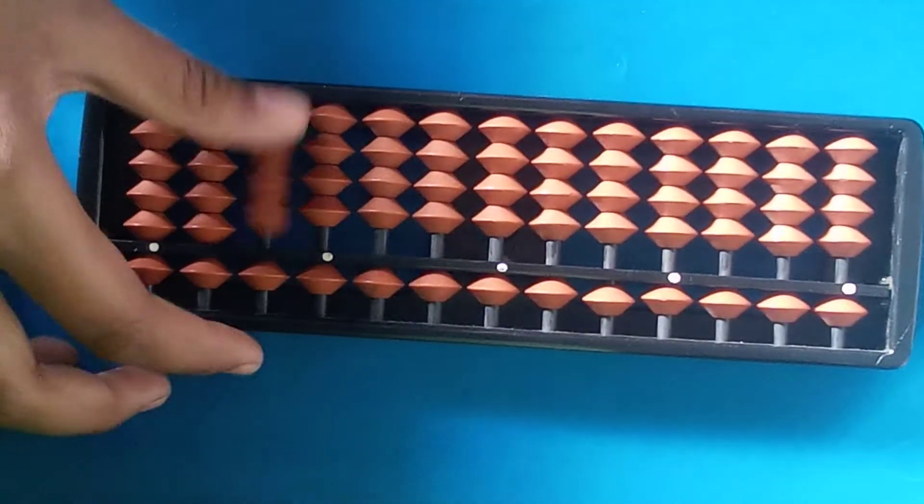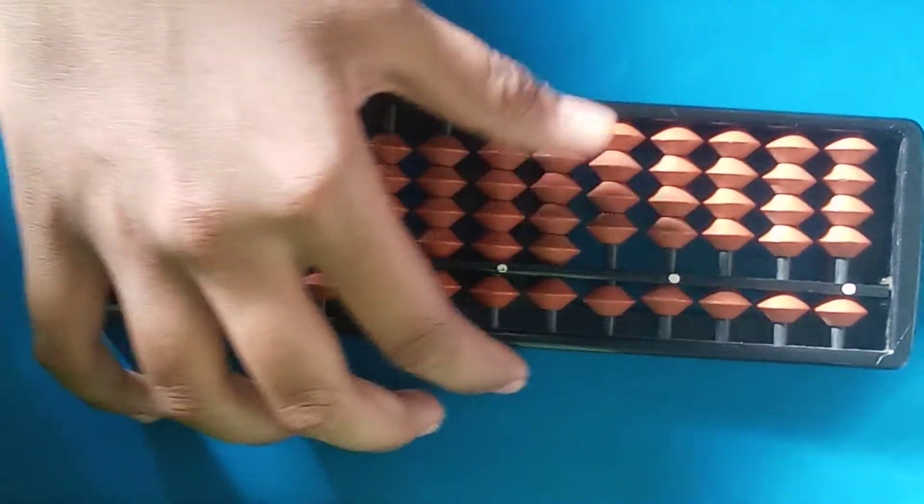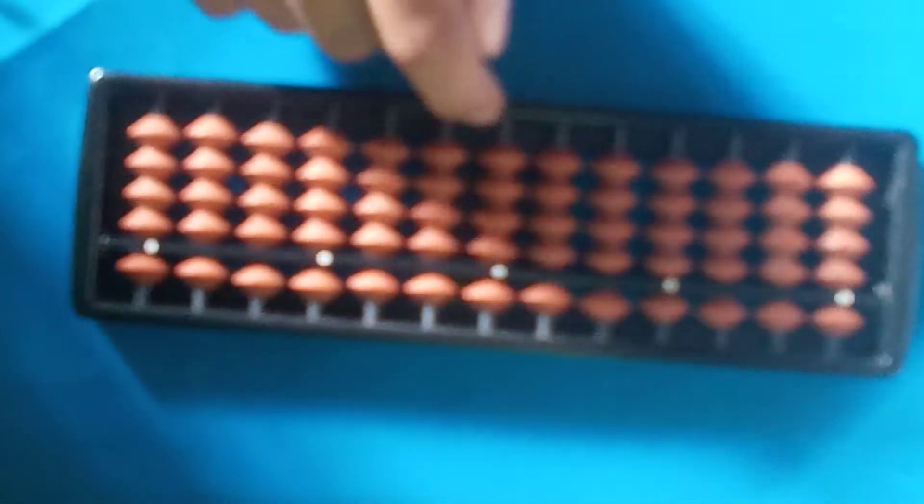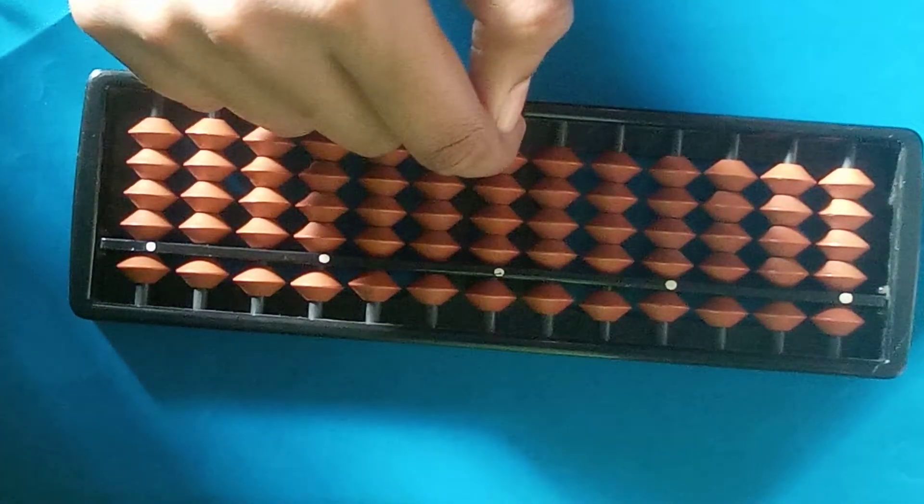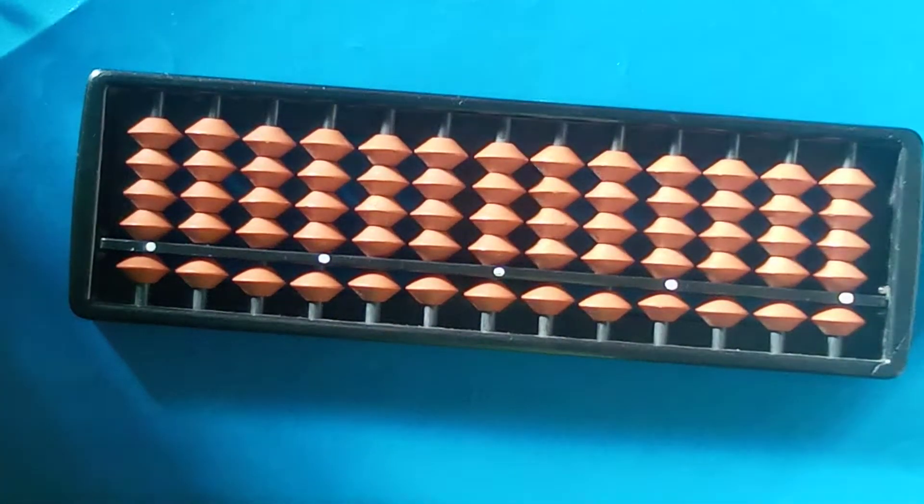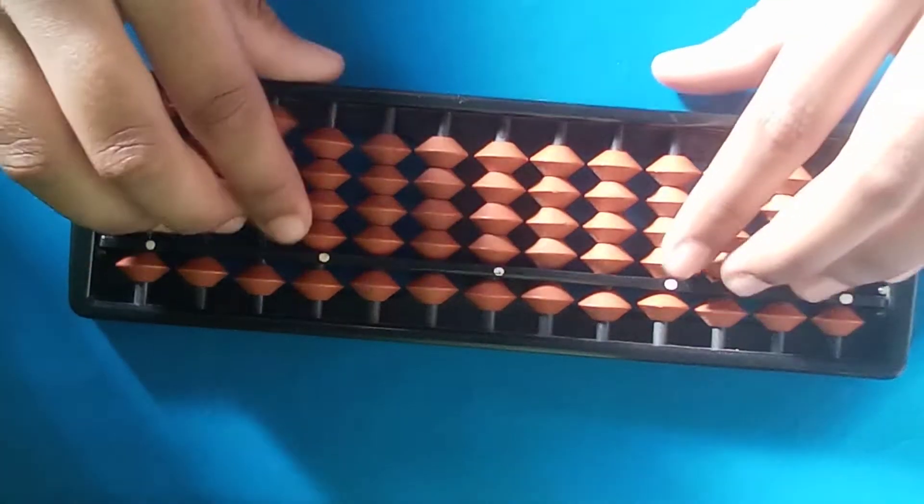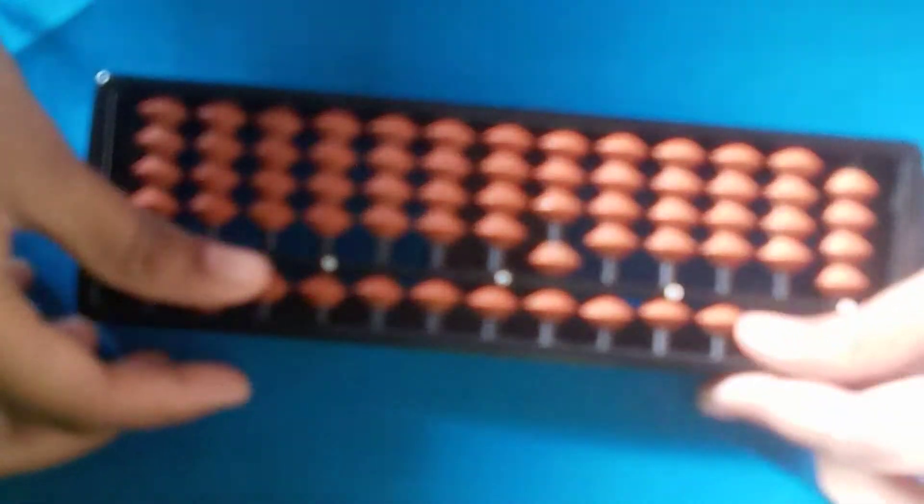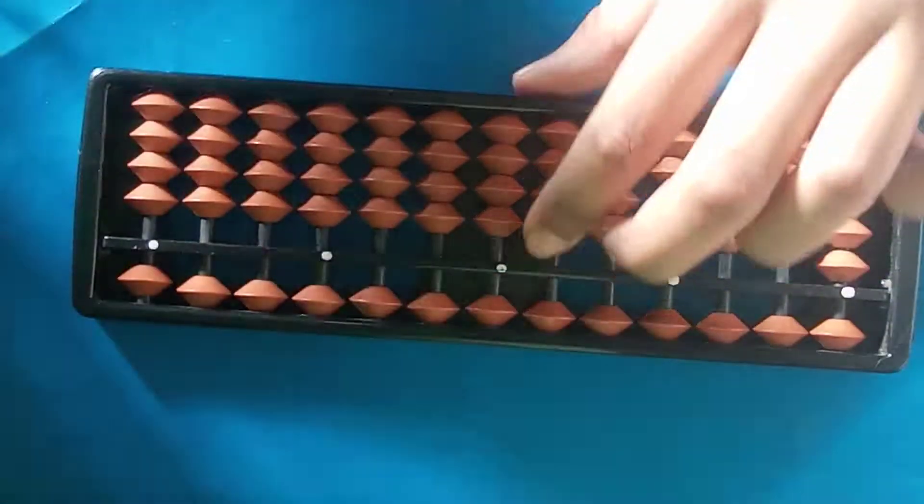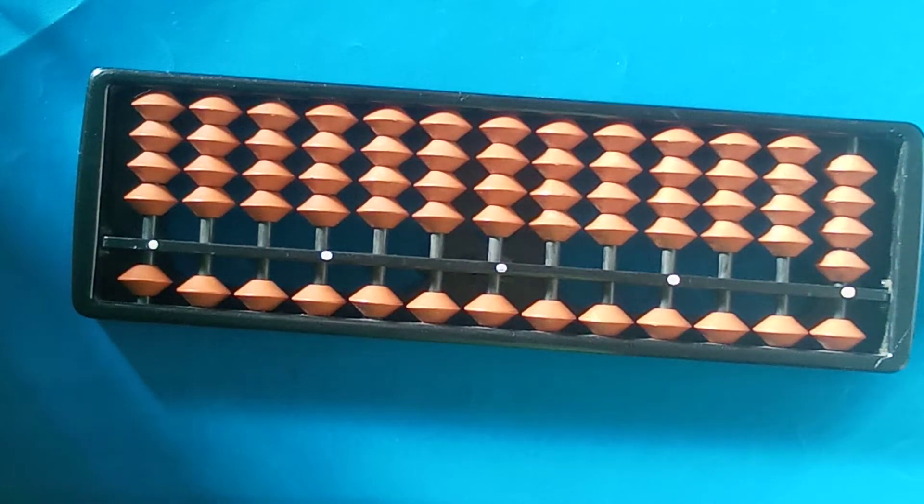And this is upper beads. All are the upper beads here, and these are lower beads. And these rods you can see, the black color is known as rods.